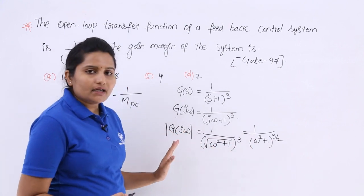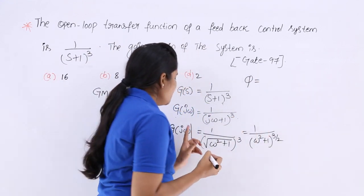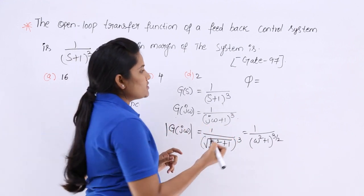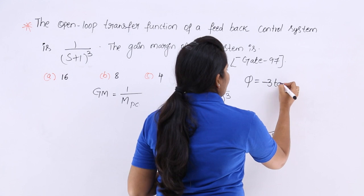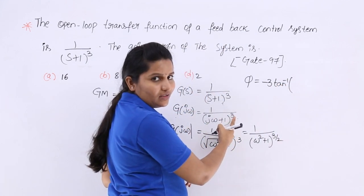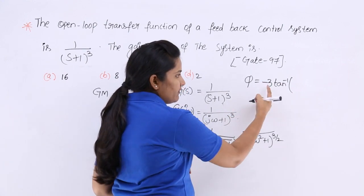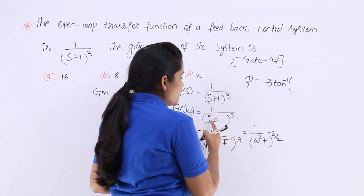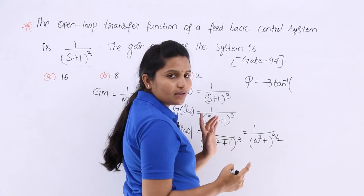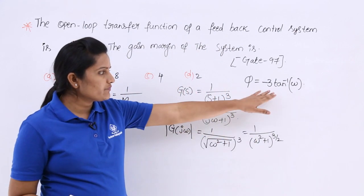Coming to the phase angle φ: from this transfer function, if you want the phase angle, that is equivalent to minus 3·tan⁻¹(b/a). Here we have the whole power 3, and since it is in the denominator, it is minus. The term tan⁻¹(b/a) means tan⁻¹(ω/1), i.e., the imaginary coefficient by the real term. So the phase angle is −3·tan⁻¹(ω).